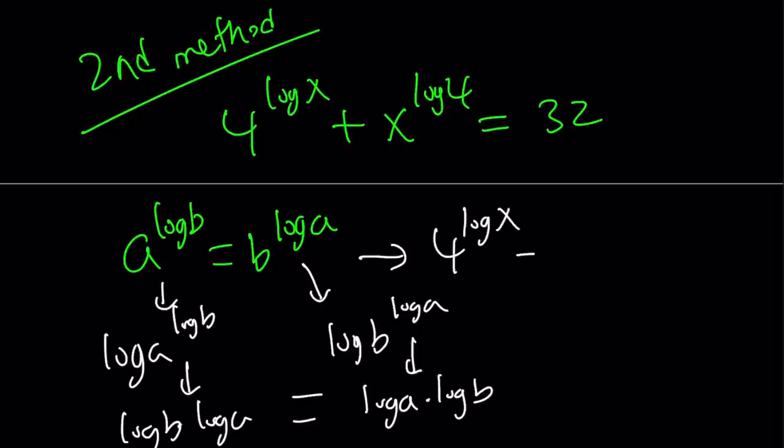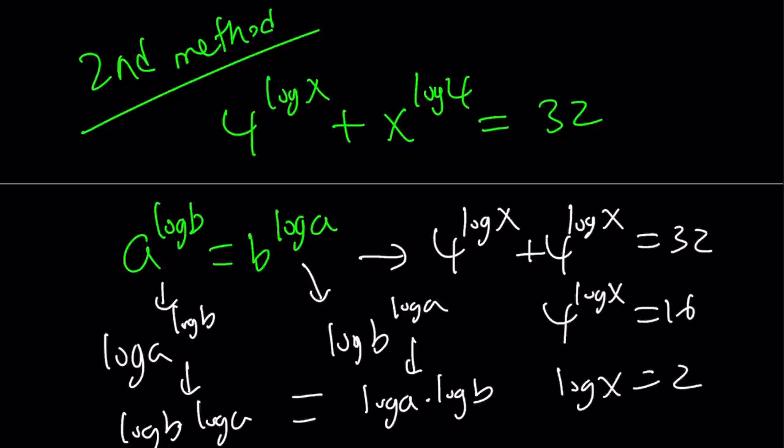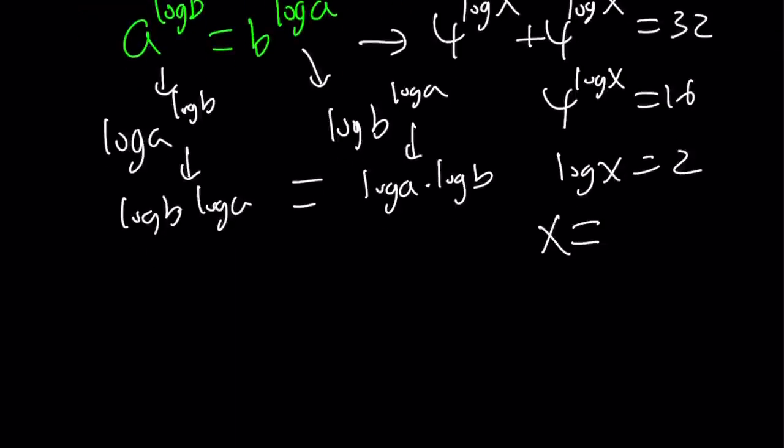Which means we have 4^(log x) plus x^(log 4) equals 32, which means 4^(log x) equals 16, and log x equals 2. And by definition, x equals 10^2, which is 100.